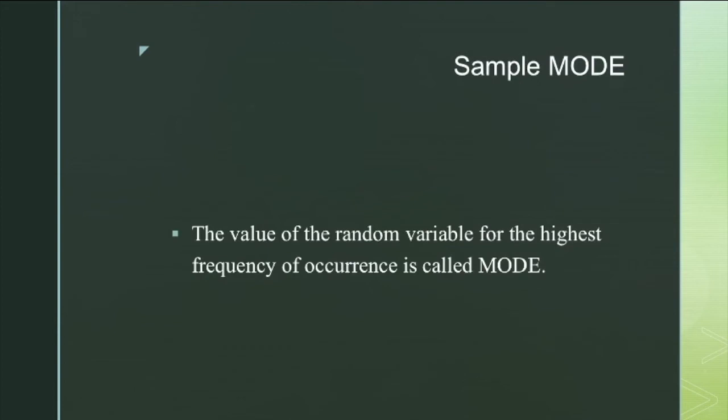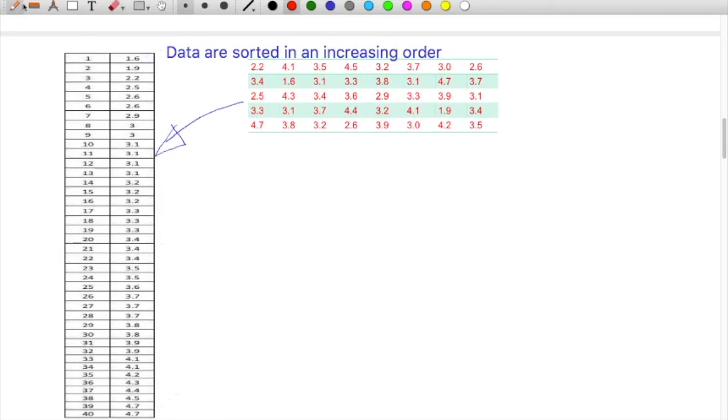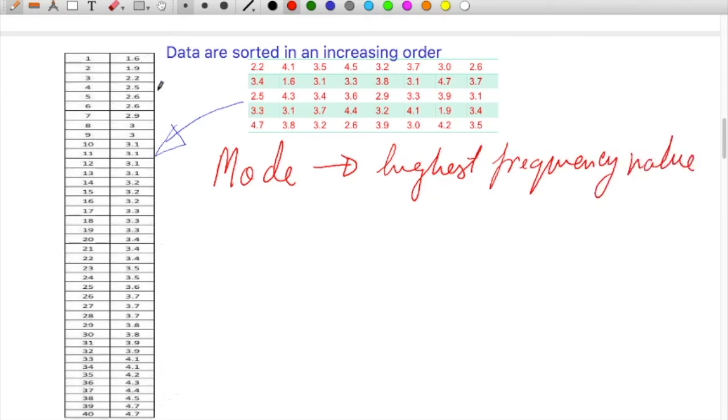Sample mode: if you find out the frequency of occurrence of every value, then the most occurred value is called the mode. I will show you how to calculate. In case we are interested to find out the mode value, mode is nothing but the highest frequency value.